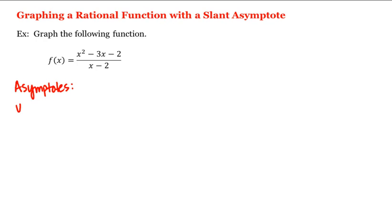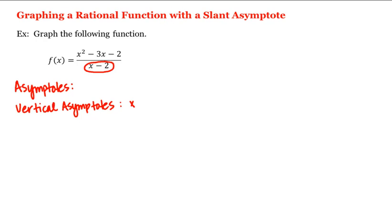We'll begin with vertical asymptotes. A rational function in simplest form has vertical asymptotes at the zeros of the denominator. Looking at our function, our denominator will be zero when x is equal to 2, which means that the graph of this function does have a vertical asymptote given by the equation x equals 2.